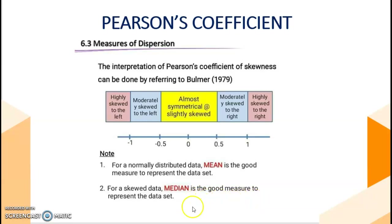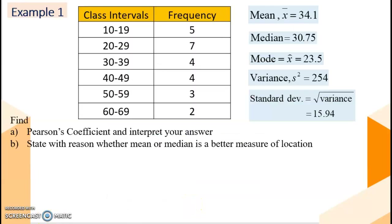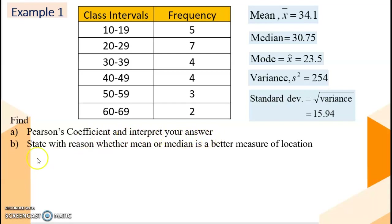We look at Example 1. Let's say we have a data. We are given mean is 34.1, median, mode, variance, and standard deviation. The question asks: find the Pearson coefficient and interpret your answer.